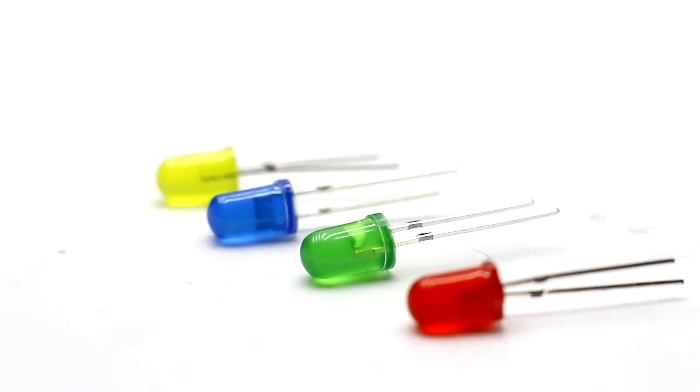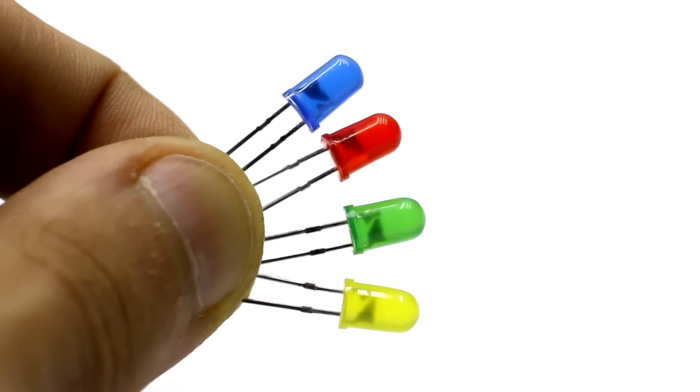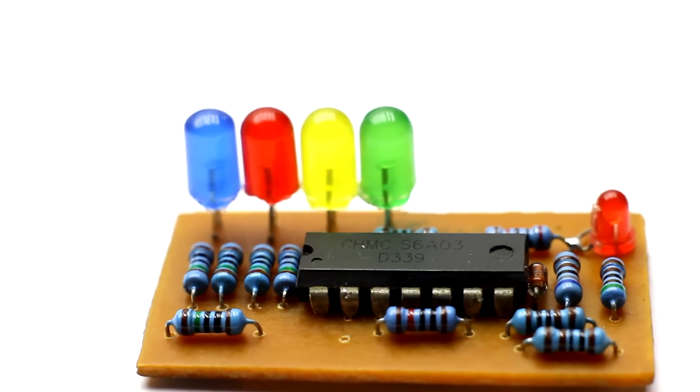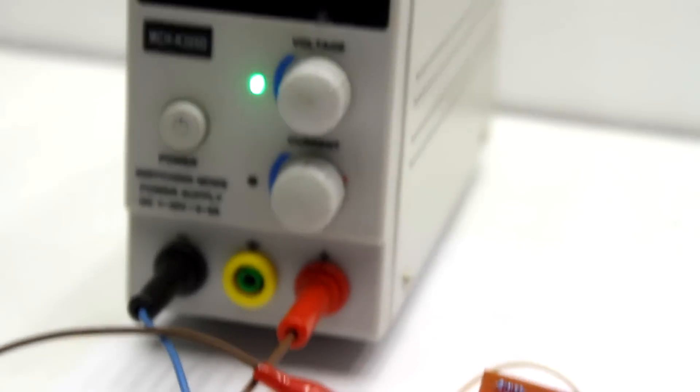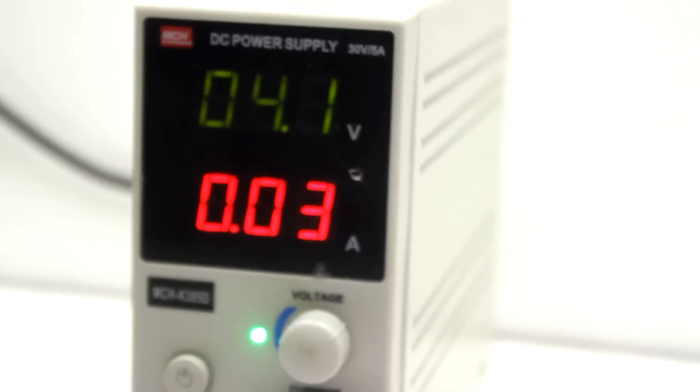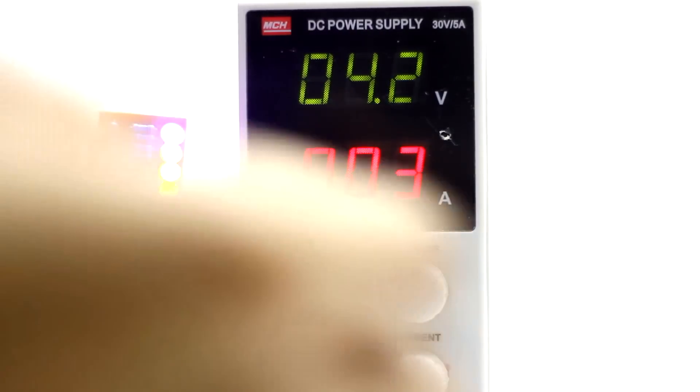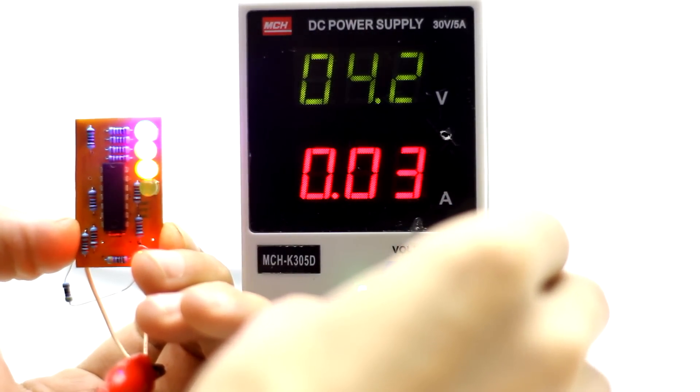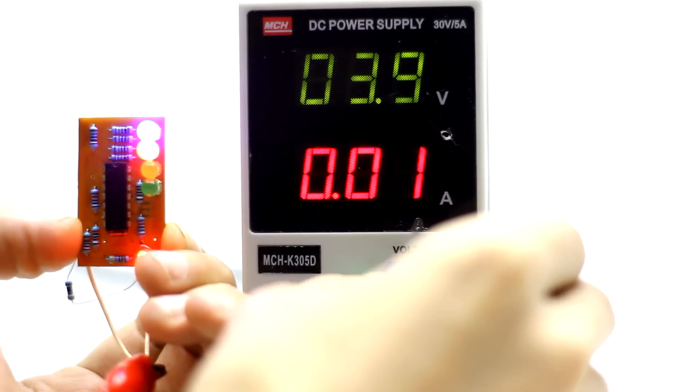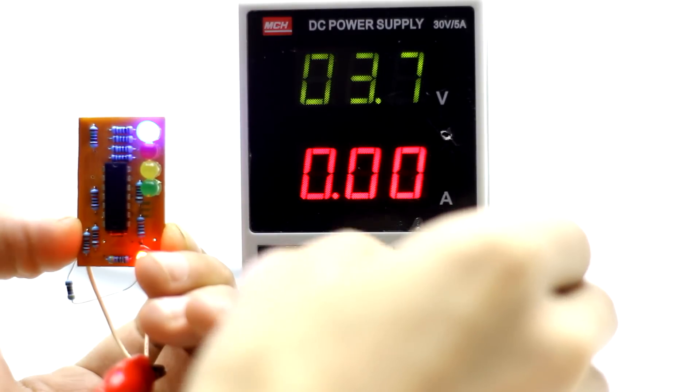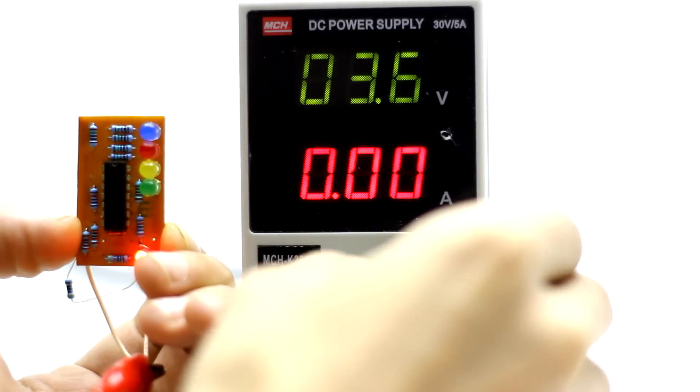We have four LEDs. Colors could be any, up to your taste. To test the operation, I connect a laboratory power supply where the voltage of a fully charged battery is set. All LEDs are on. I am gradually reducing the voltage to simulate the discharge of the battery and observe the alternate decay of the LEDs at certain voltages. This indicates the correct operation of the indicator.